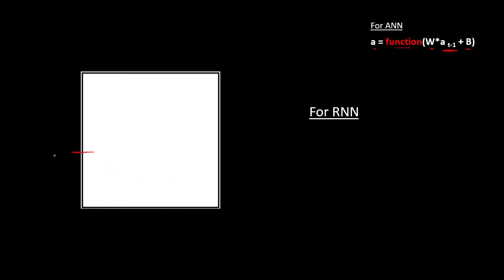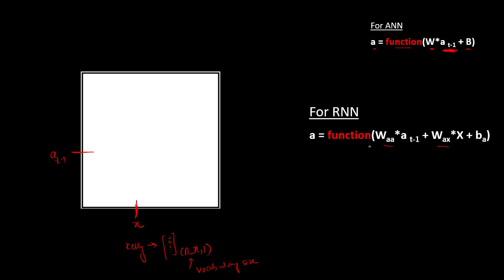For the RNN the equation is similar, but here we have two inputs: one is the activation from the previous timestamp, and one is x, which is the current word — for example 'Kelly' converted into a one-hot vector of shape (nx, 1) where nx is the vocabulary size. We multiply each input with its own weight matrix: the previous activation a(t-1) is multiplied with weight matrix Waa, and the input x is multiplied with weight matrix Wax. We then add a bias ba and pass it through an activation function.